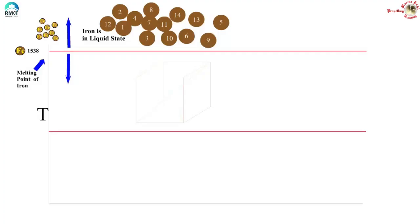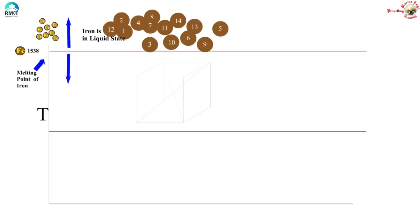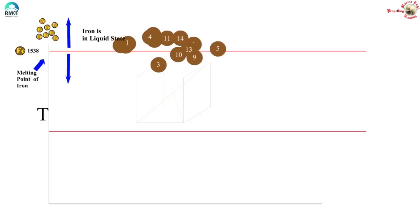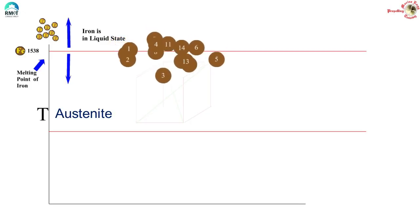We all know that a substance has a solidifying point or melting point — it exists as liquid above this temperature and as a solid below it. Looking at iron, our favorite metal on ships, at temperatures above 1538°C it is in a liquid state, and below that it will solidify. When iron solidifies, the atoms arrange themselves in a unique and particular way — this arrangement is called austenite.